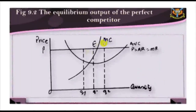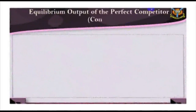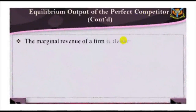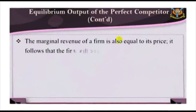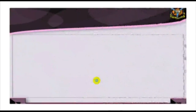Since marginal revenue of the firm is also equal to its price, it follows that the firm will equate marginal cost of its product with the price of its output. Hence, the short-run equilibrium position of the firm can be represented as MC equals P. Any other output is inefficient.